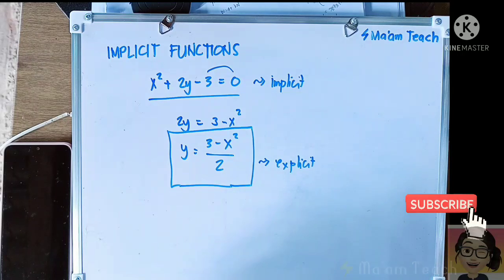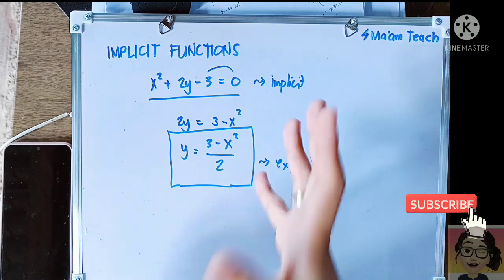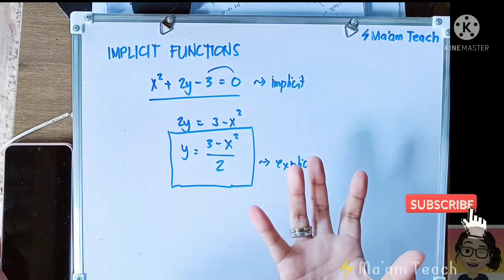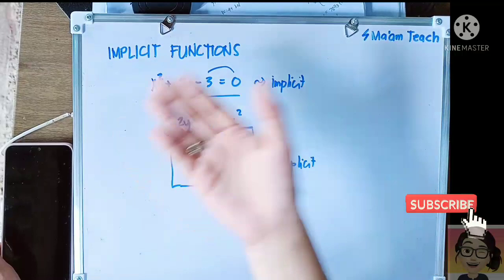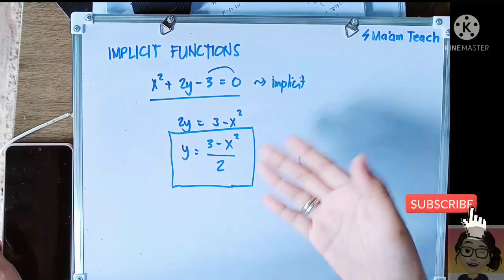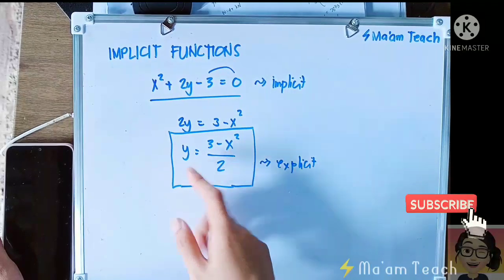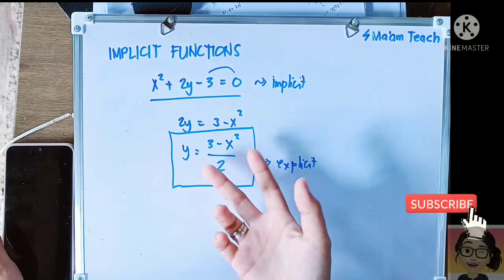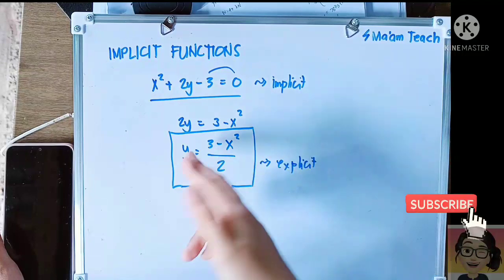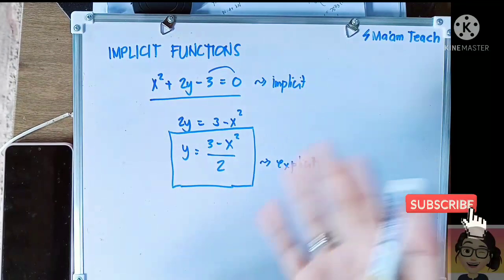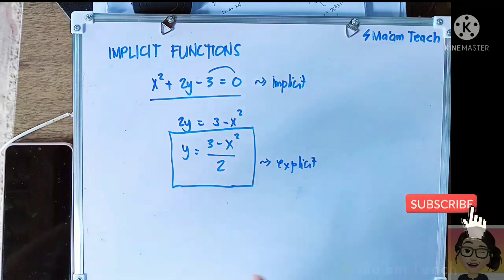So implicit functions class are not really functions itself, but rather they are somewhat definition or it's just a statement. Unlike here in this kind of equation which is explicit, it is really showing that this is your input and this will be your output. So that's what we mean by implicit functions.